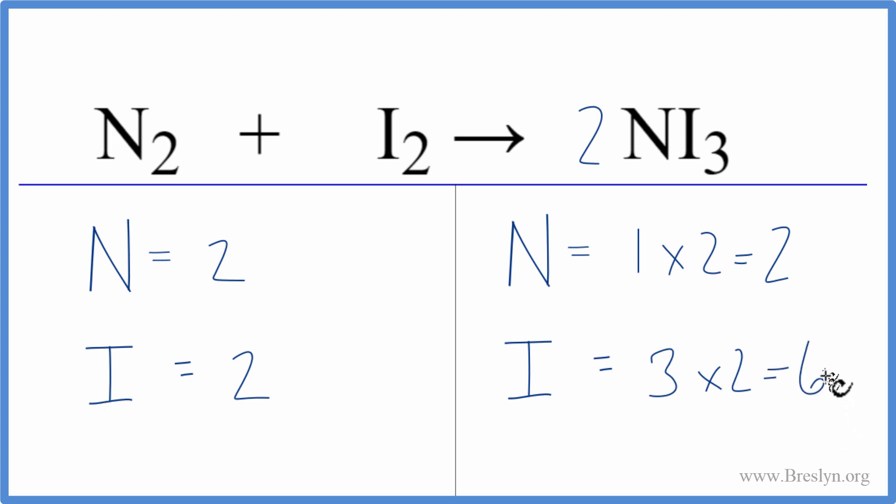So now the iodines aren't balanced, but since this is an even number, we could put a coefficient of three in front of the I2. So two times three, that would give us six iodine atoms, the same as on the product side.